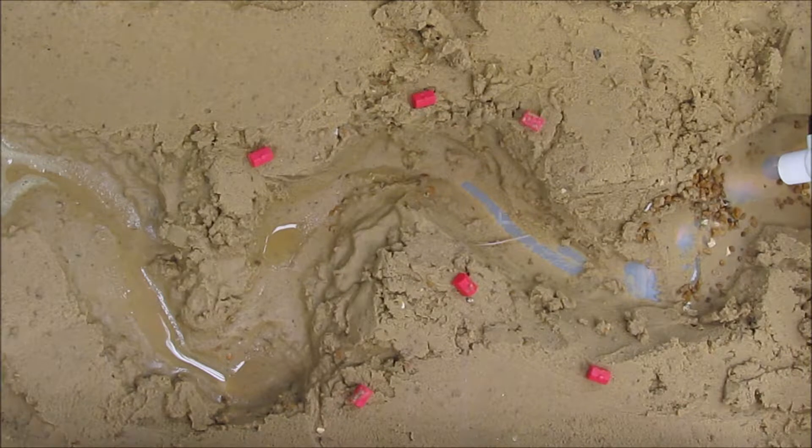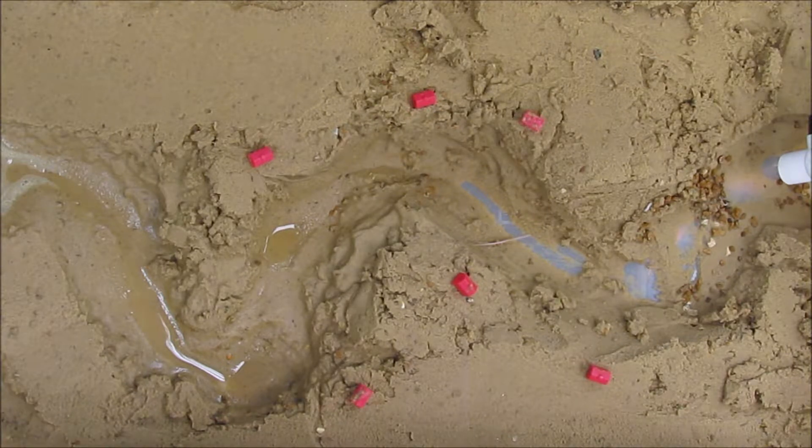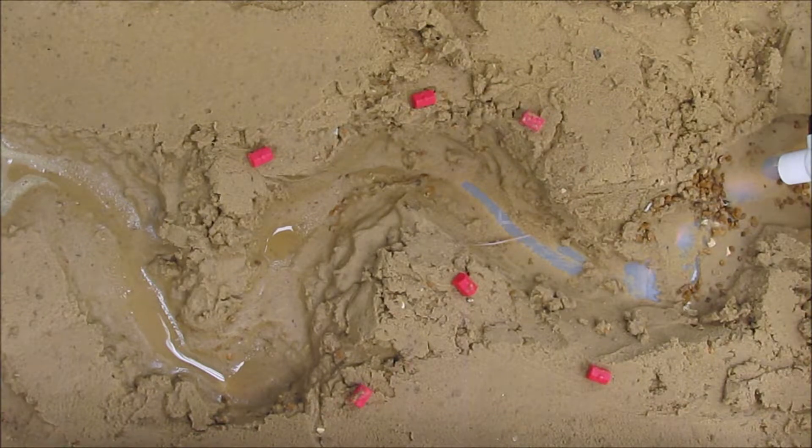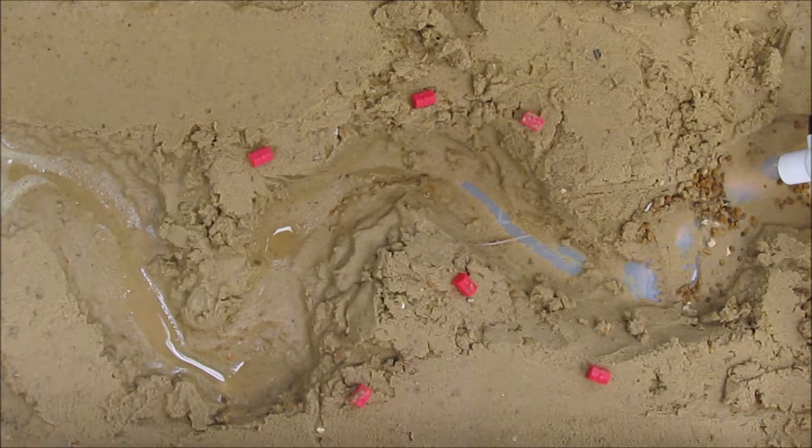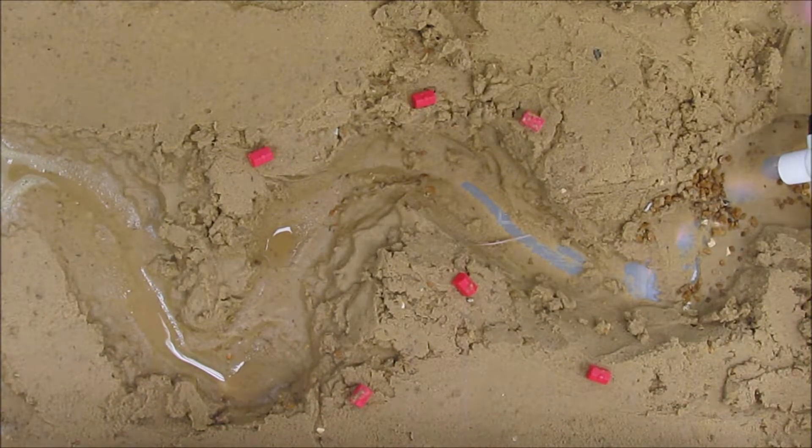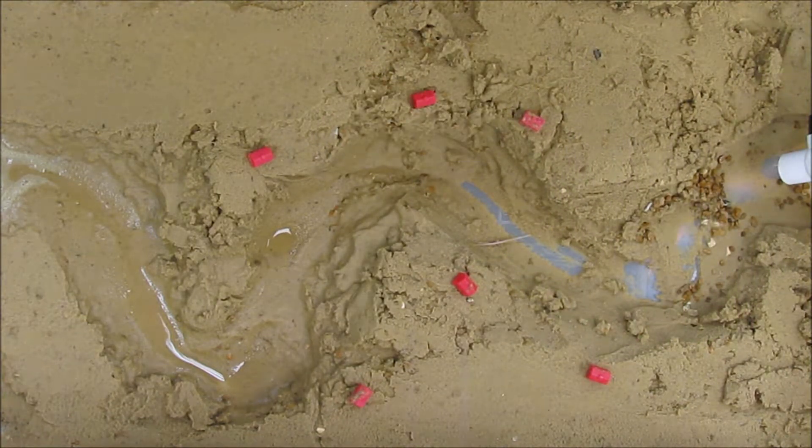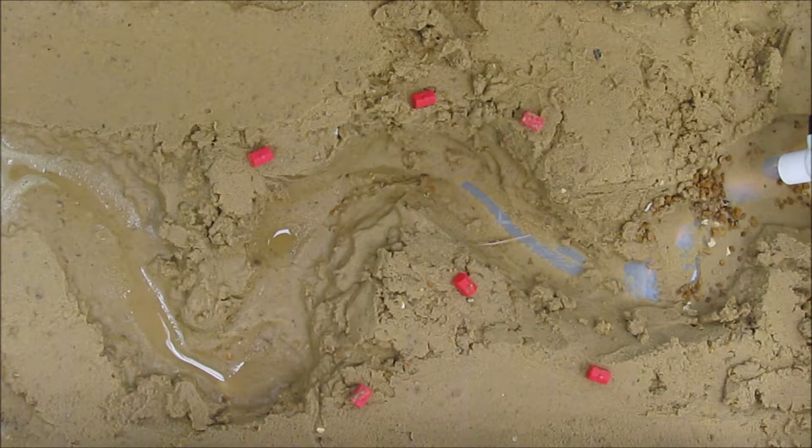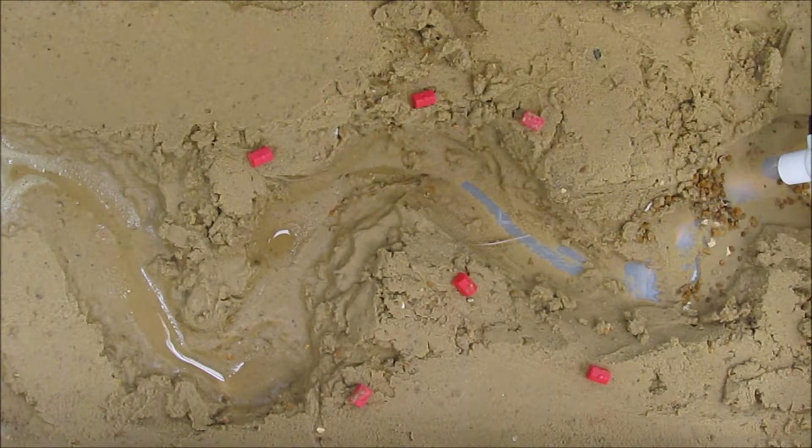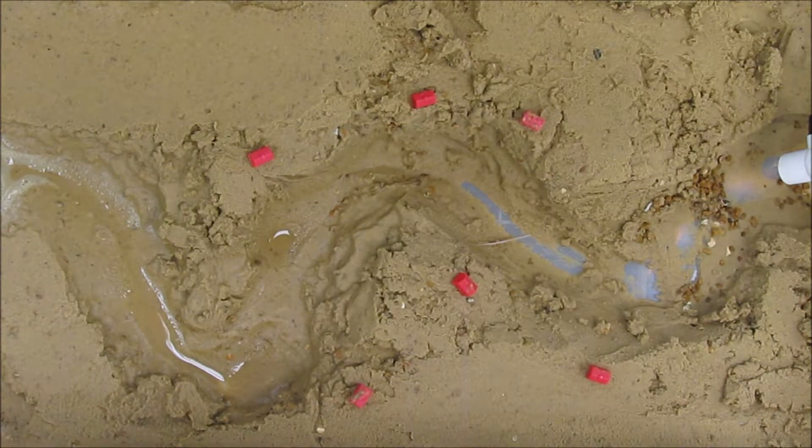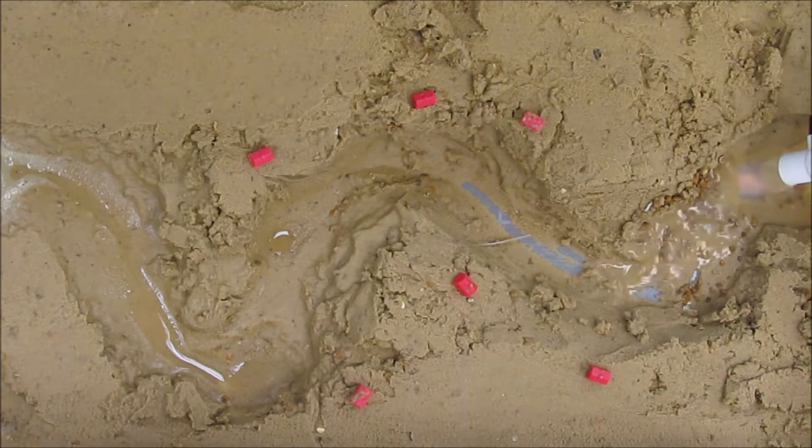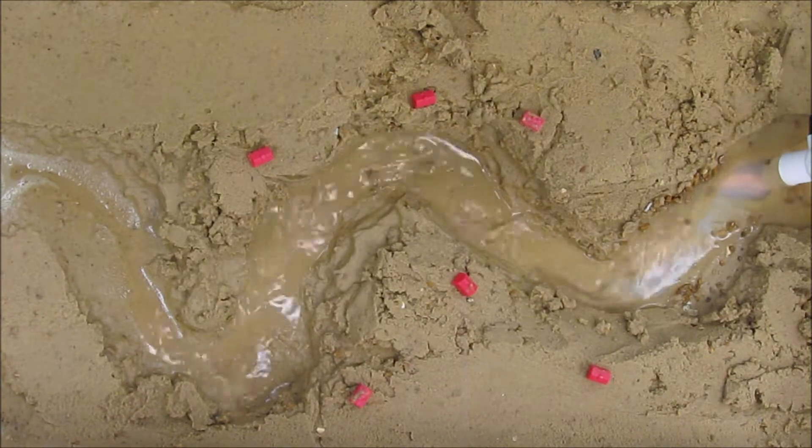Here's another model of a stream, a meandering one again. This time I'm going to add food coloring to the water so that you can see the direction of fastest flow. Now fastest flow usually goes along the outside of each meander, and that's also where the most erosion occurs. So watch closely once the water starts flowing while I add food coloring to the stream.